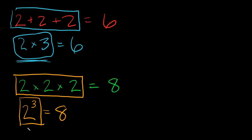One last thing to point out: this big number — in this example it would be 2 — is called the base. This is your base number. And then this little number up here is called your exponent, or your power. Let me give you a few examples and a couple rules, and I think they're going to start making a lot more sense.